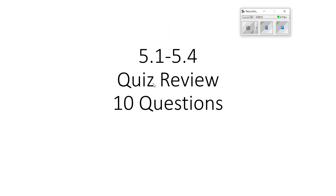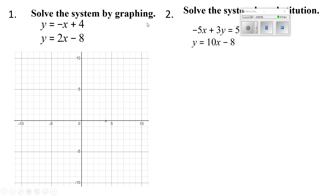Hey guys, let's go ahead and get this quiz review going. I'm going to try to make it as quick as possible. I'll solve the system by graphing. My y-intercept is at 4, and my slope is negative 1 over 1, so I'll go down 1 and over 1. Those are my two dots, and I'll make a line that connects them, then go to the next one.